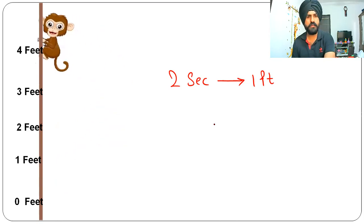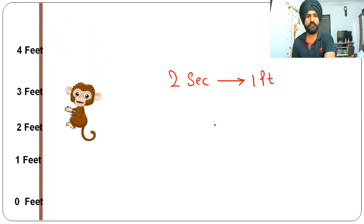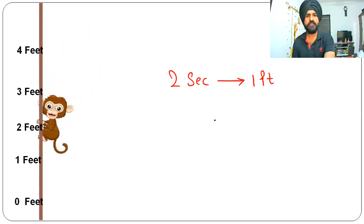But then in the next second the monkey will slip by two feet, so he will be at two feet mark. That means effectively in two seconds he is traveling one foot, because in two seconds one foot travel, in the next two seconds again one foot travel.